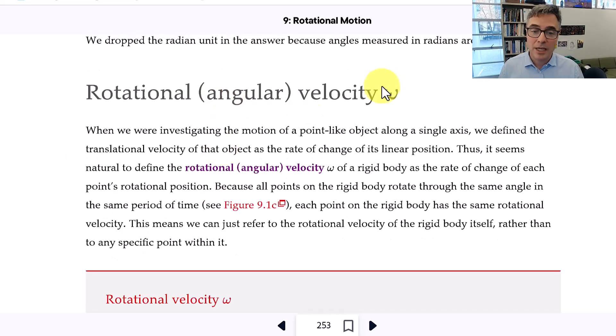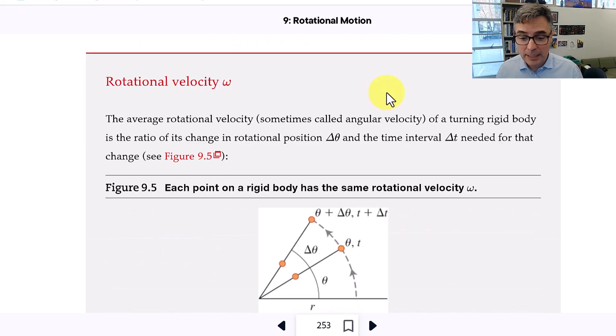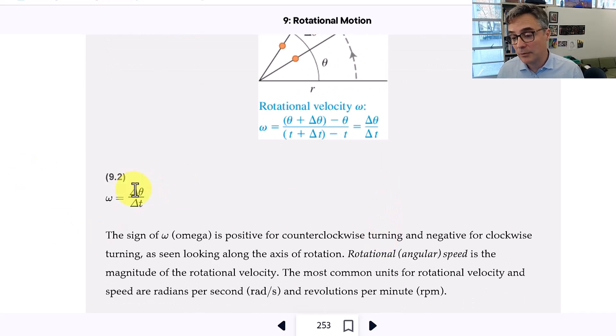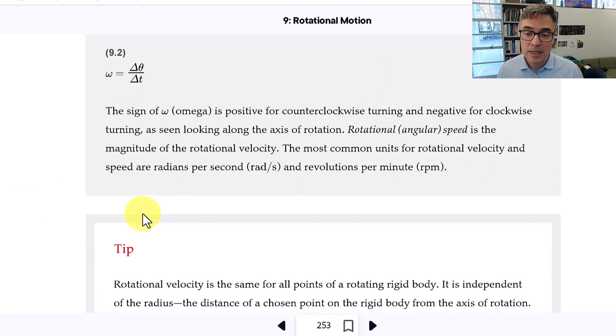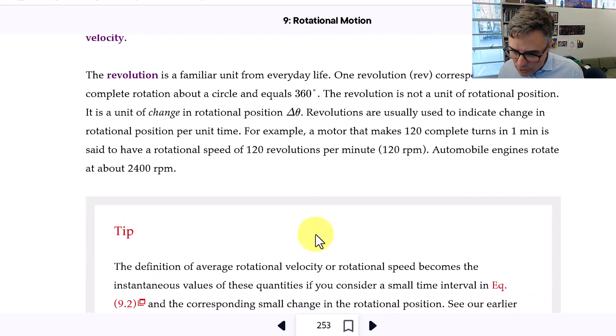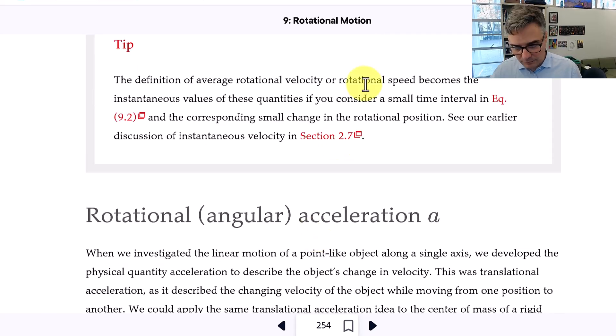Next concept is rotational velocity, omega. So that is the change in angular position, delta theta, divided by the change in time. Omega equals delta theta over delta t. And it's positive for counterclockwise turning and negative for clockwise turning as seen looking along the axis of rotation.